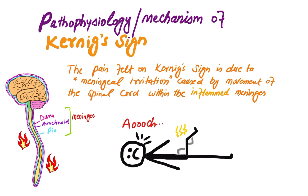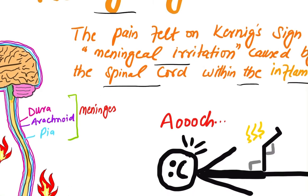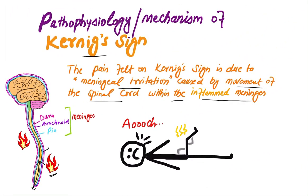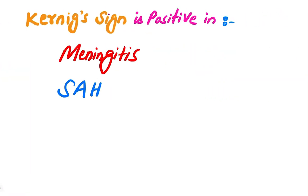What is the pathophysiology or mechanism of Kernig's sign? The pain felt on Kernig's sign is due to meningeal irritation caused by the movement of the spinal cord within the inflamed meninges. In meningitis, the meninges are inflamed. When we move the leg or try to extend the leg at the knee joint, the spinal cord moves and causes irritation of the inflamed meninges, producing pain. Kernig's sign is positive in meningitis and also in some cases of subarachnoid hemorrhage.